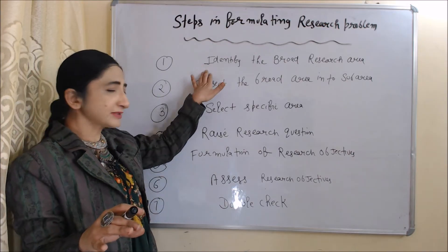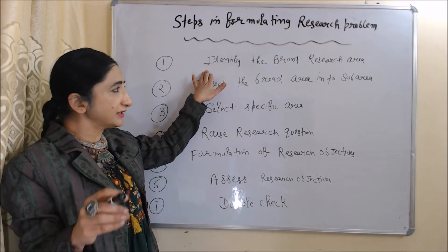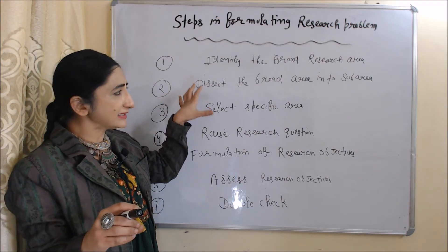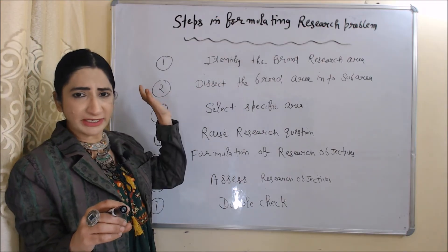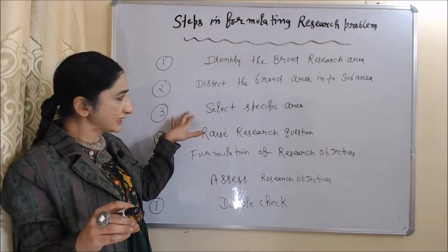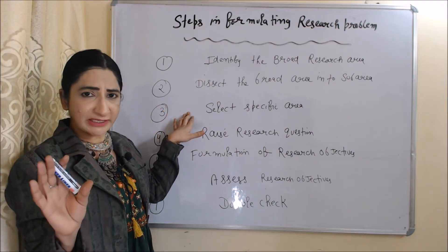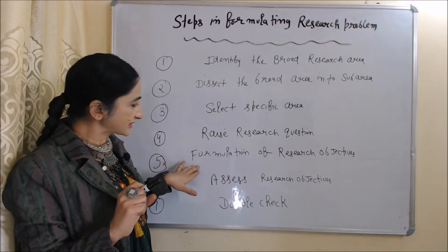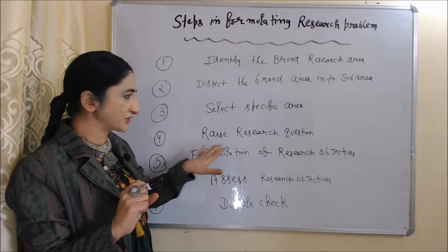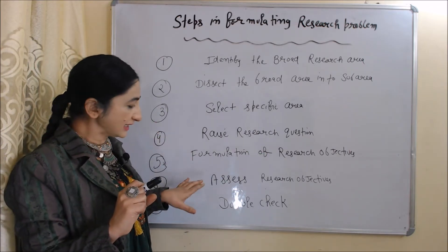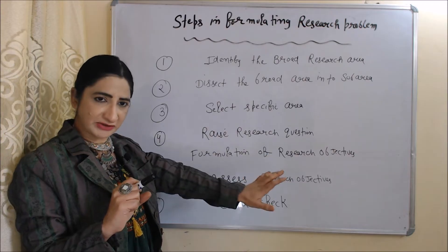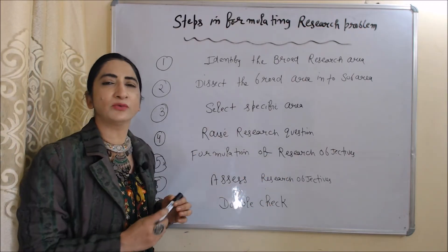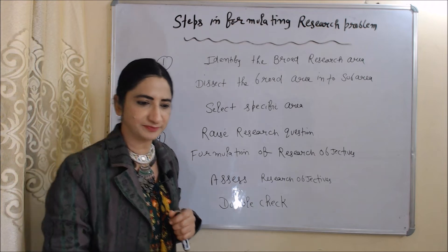Now we will see the steps in formulating a research problem. The first step is to identify the broad research area. Second, dissect the broad area into sub-areas. Third, select a specific area. Fourth, raise a research question. Fifth, formulation of research objectives. Sixth, assess the research objective. And last, double check. We will now discuss each step one by one.